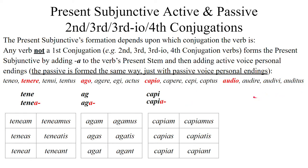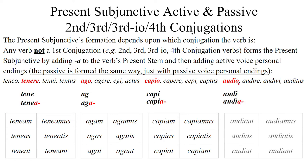Fourth conjugation, like audio, audire, audivi, auditus. Just like the third and the third IO, go to the first principal part to get the present stem, chop off the O — audi- — add the letter A, and add the personal endings: audiam, audias, audiat, audiamus, audiatis, audiant. And the passive would be: audiar, audiaris, audiatur, audiamur, audiamini, audiantur.